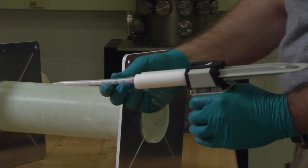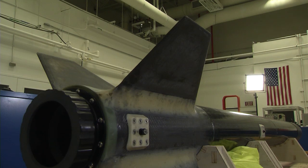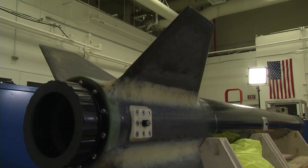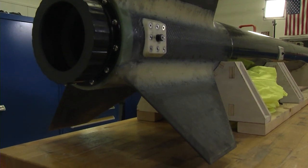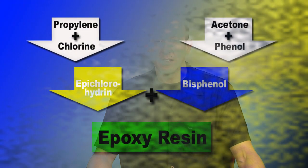When you mix epoxy, you combine two liquids which react to form a solid, very strong plastic material. Although the final chemical equation for the epoxy reaction is a bit complicated, it begins as four very common chemicals: propylene, chlorine, acetone, and phenol. Here's what the process looks like.